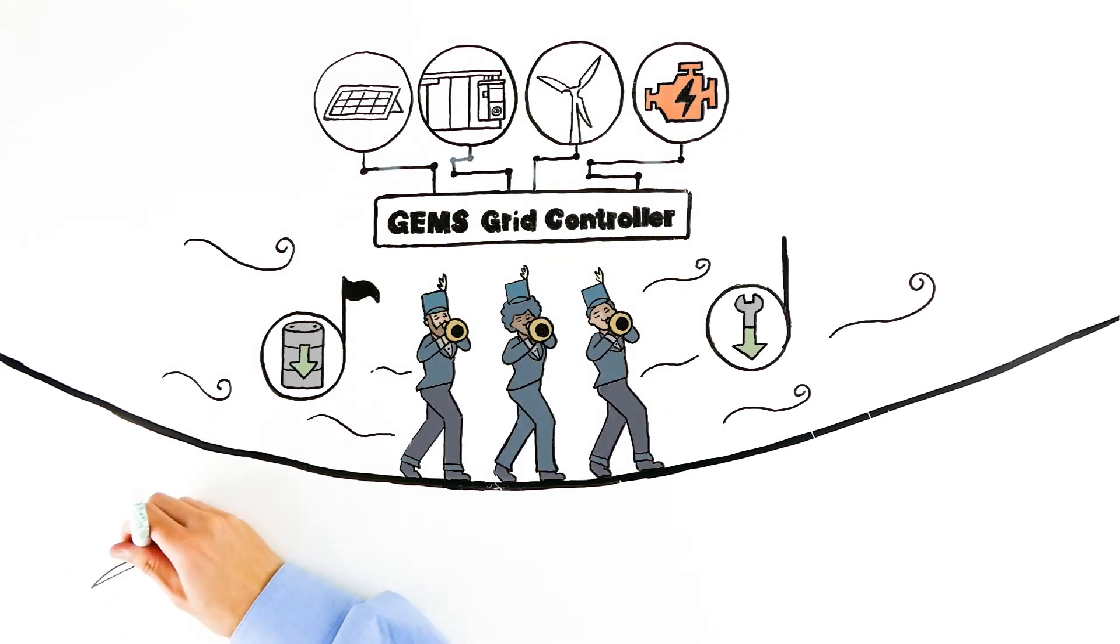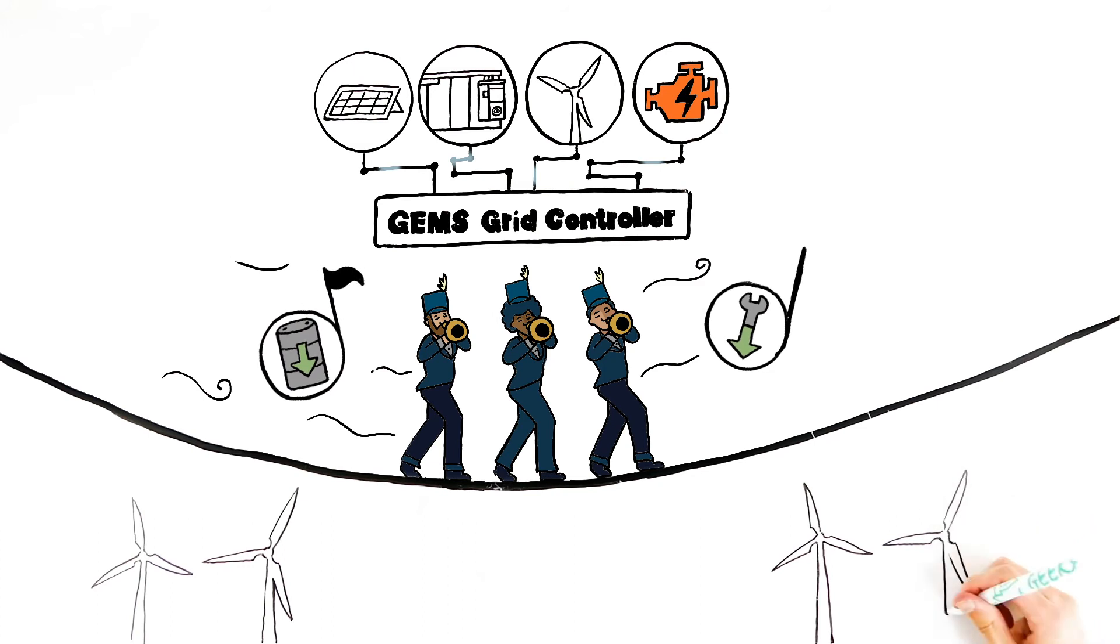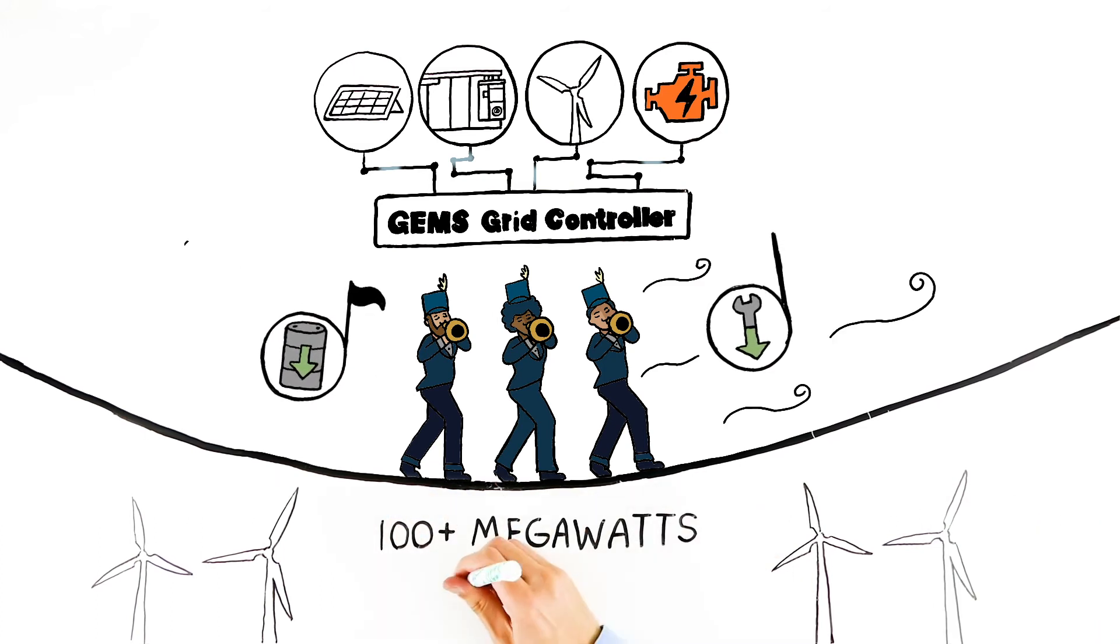And Wartsila can do the same for bigger operations, too. A single grid controller can support thousands of devices and 100 megawatts of power.